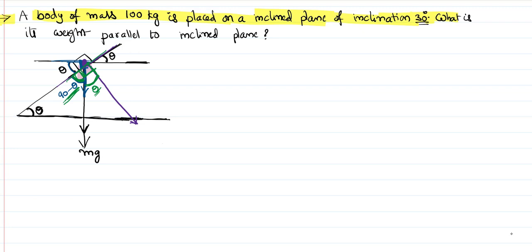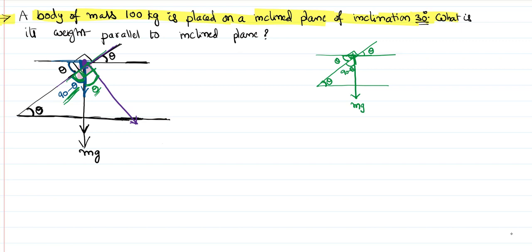Let me redraw this more clearly. If this angle at the base is theta, these two angles are both theta because of parallel lines. Then this angle is 90 minus theta. If I draw a perpendicular to the inclined plane, and since this angle is 90 minus theta, the angle between mg and the perpendicular to the inclined plane will be theta, because 90 minus theta plus theta gives back 90 degrees.